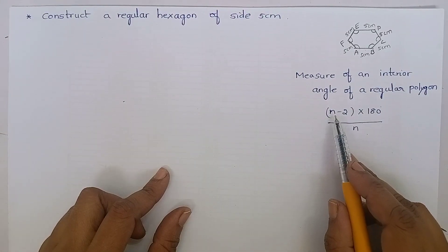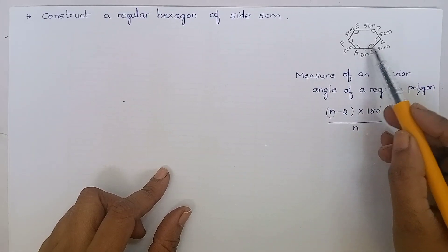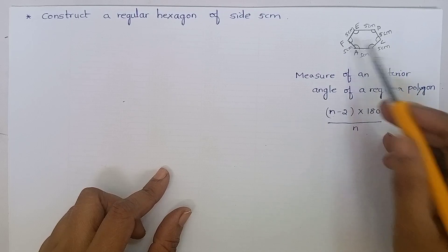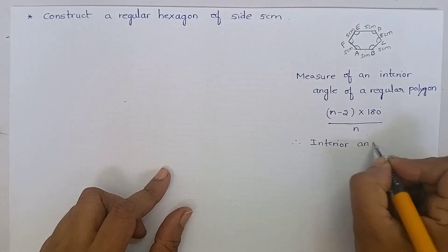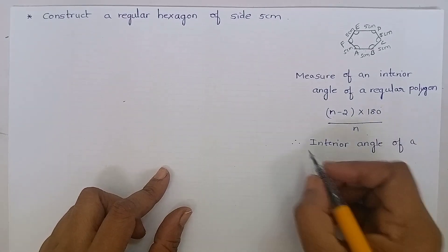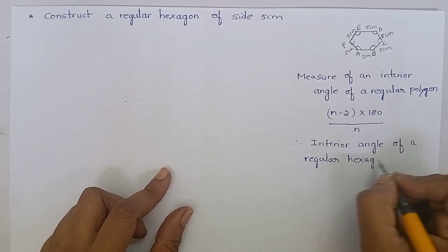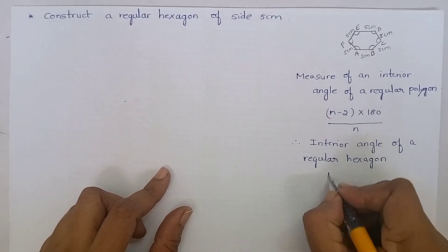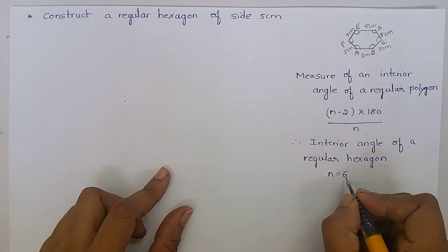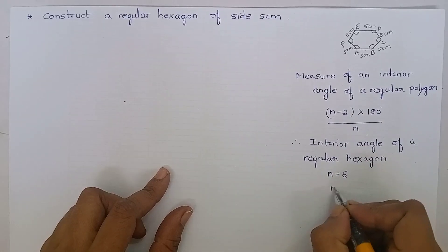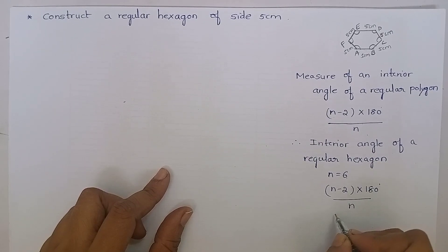The formula is: (n minus 2) into 180 degrees divided by n, where n denotes the number of sides. In a regular hexagon, we have 6 sides. Therefore, for the interior angle of a regular hexagon, n is 6. Let us substitute this 6 in the formula.